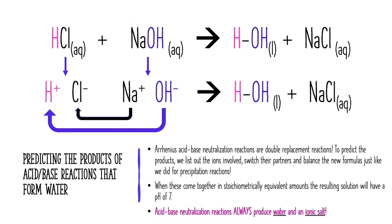Let's take a look at our example. I have hydrochloric acid dissolved in aqueous solution and sodium hydroxide also dissolved in aqueous solution. I'm going to break each compound down into the ions it dissociates to when dissolved in water. HCl breaks down into hydrogen and chloride ions; NaOH breaks down into sodium and hydroxide ions. The ions switch partners: hydroxide bonds with hydrogen to form water, and sodium and chloride come together to form sodium chloride. All acid-base neutralization reactions involving Arrhenius acids and bases form water and some kind of ionic salt, depending on which acid and base are reacting.